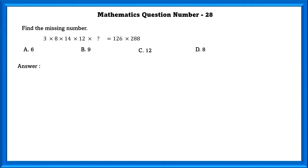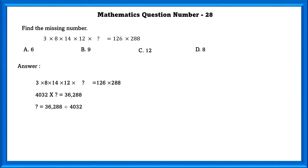Mathematics question number 28. Find the missing number: 3 × 8 × 14 × 12 × (dash) = 126 × 288. That is 4032 × (dash) = 36,288. In order to find this we divide 36,288 by 4032. So the unknown number is 9.